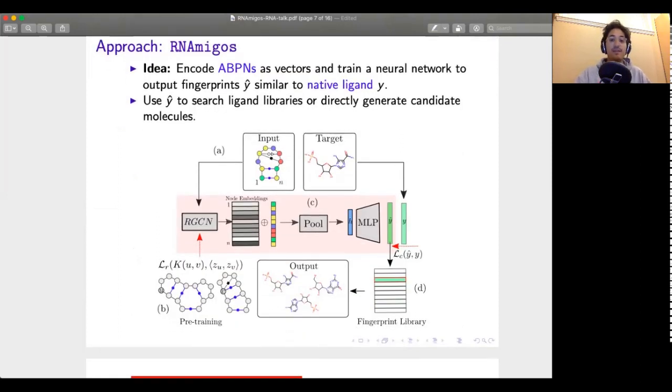The idea for RNAmigos is to do a similar thing but on the RNA side so we want to encode our RNA into a vectorial space such that we're able to use that to predict something about the native ligand that would prefer to bind this RNA site and I'll take you through the rest of the pipeline.